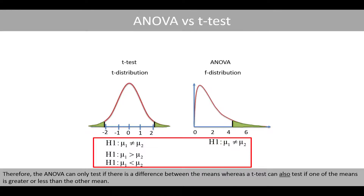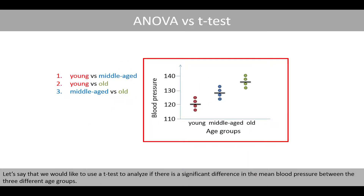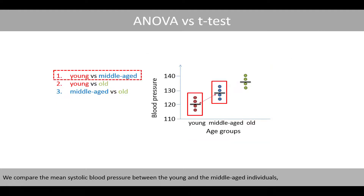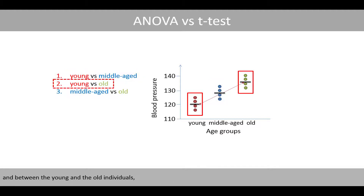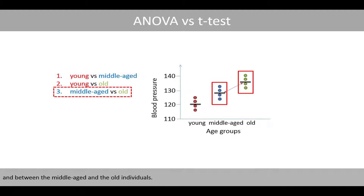Therefore, the ANOVA can only test if there is a difference within the means, whereas the t-test can also test if one of the means is greater or less than the other mean. Let's say that we would like to use a t-test to analyze if there is a significant difference in the mean blood pressure within the three different age groups. We compare the means of systolic blood pressure between the young and the middle-aged individuals, and between the young and the old individuals, and between the middle-aged and the old individuals.